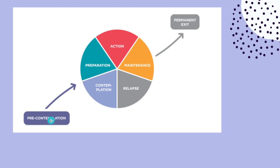We're going to start here with pre-contemplation. What I like about this visual is it's not even in the wheel of change. Pre-contemplation is when they're not ready to make a change yet — they're not even thinking about making a change. From pre-contemplation, you jump into contemplation, and this is maybe thinking that there is something they want to change or an area of their life that may be problematic or needs some sort of modification.